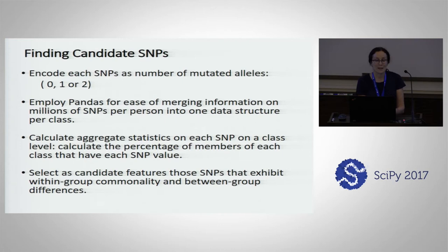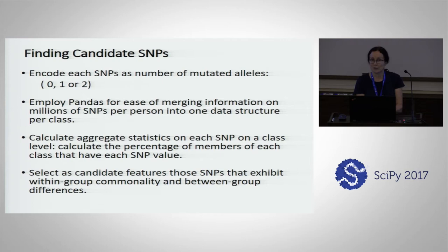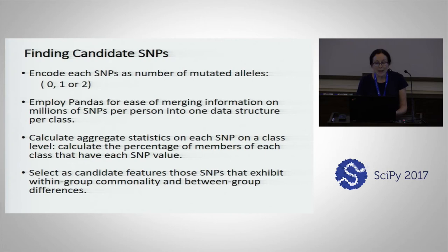What you get in the VCF file is two letters — like AC, AA, something like that. We code it as zero, one, or two mutated alleles. Two mutated alleles is necessary for a recessive monogenic trait — you have to have no working copies of that gene. We employed Pandas for ease of merging information, as you've got millions of SNPs per person, and Pandas makes it really easy to merge the information as we build our dataset.